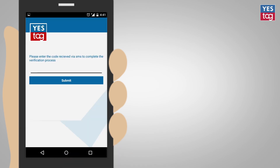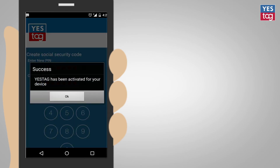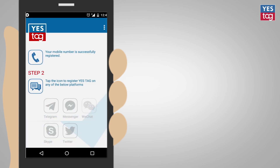You will receive a one-time password on your registered mobile number. Key in that OTP on the next screen and you are registered. You can now activate or deactivate the social media banking facility on any of the following applications.